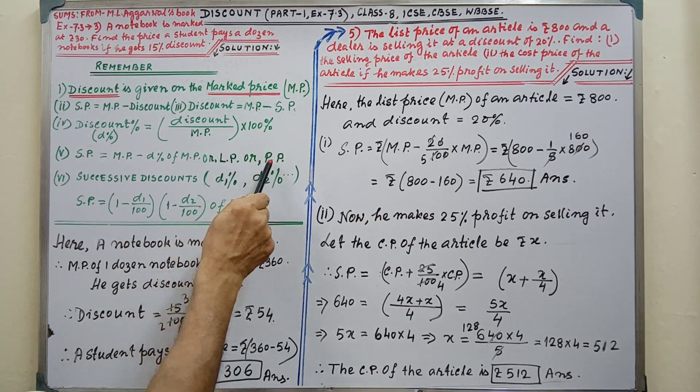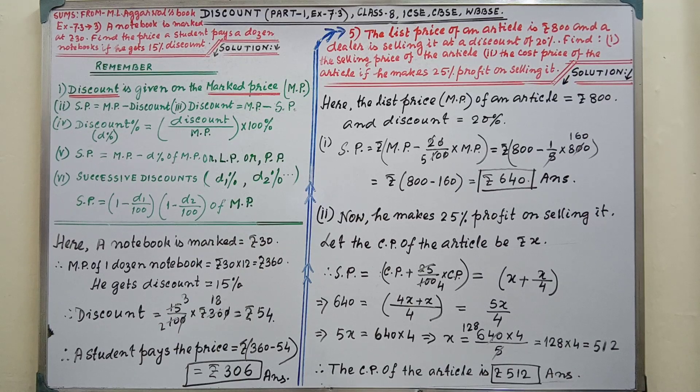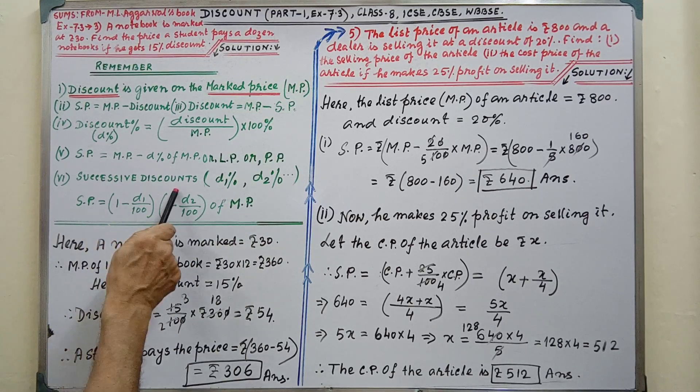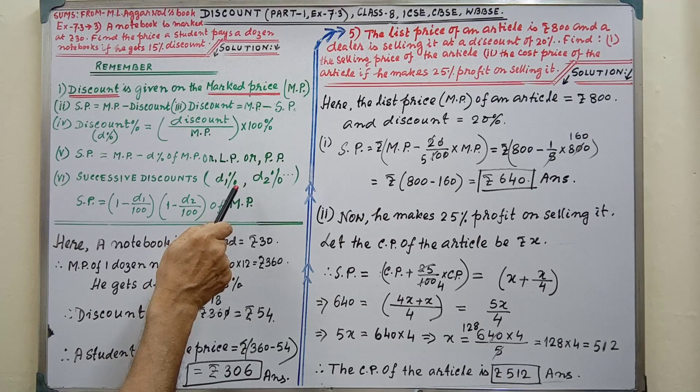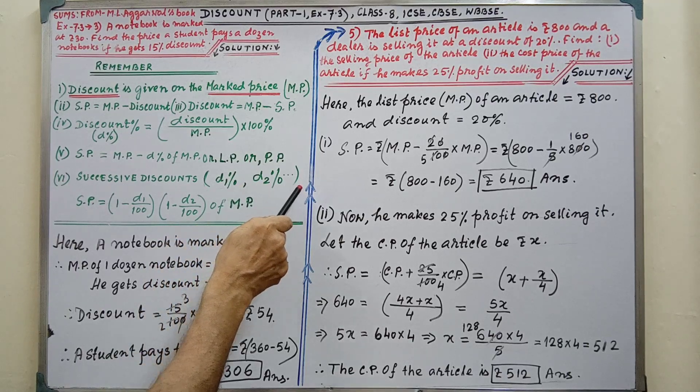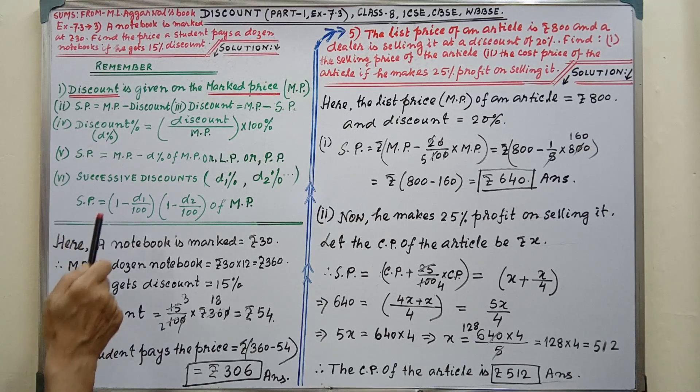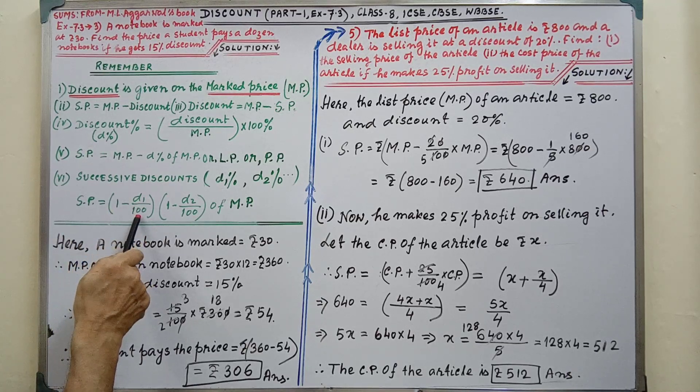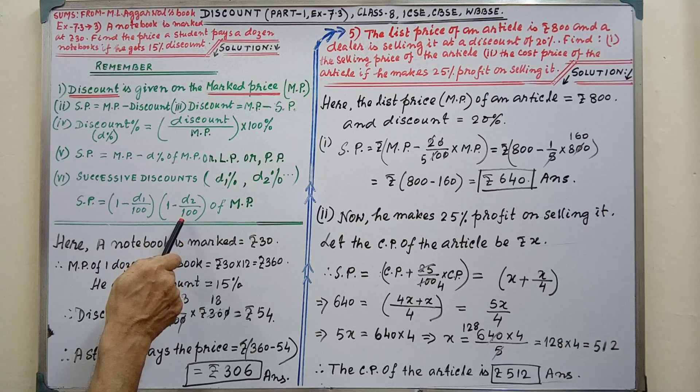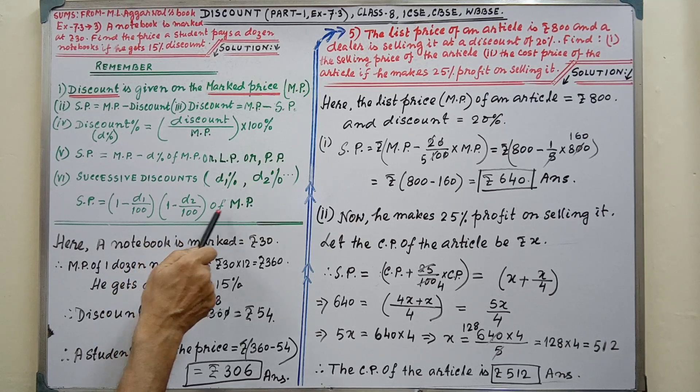LP that is list price, PP that is printed price. Successive discount: D1%, D2%, D3% and so on. Then SP = (1 - D1/100) × (1 - D2/100) in this way of MP.